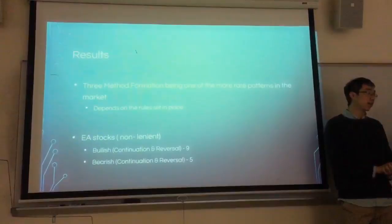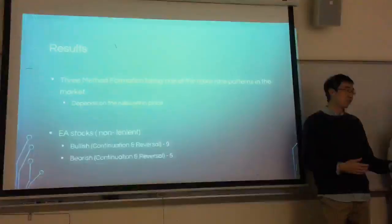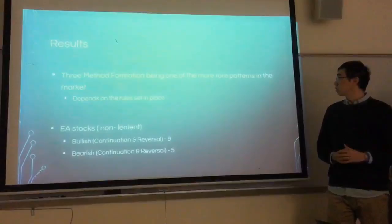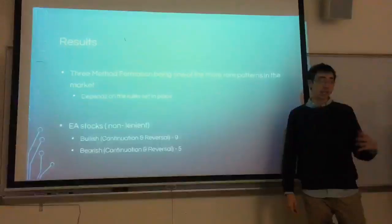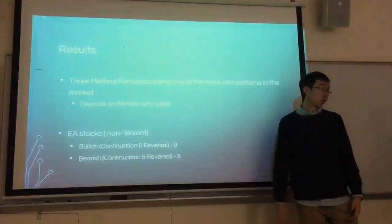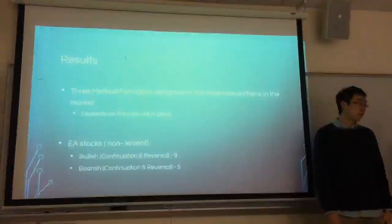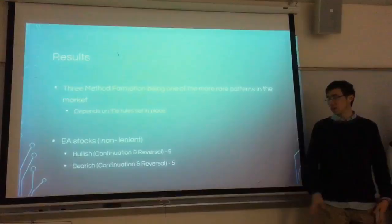Another issue with the results we did with EA, the program that we wrote, you can only put one CSV inside and then switch it out every time you want to, which is not optimized. The three method formation, the results, this is the non-linear one. This is why we tried to change the rules a bit because we found in the EA from 2007 to 2017 we only found nine bullish cases, both continuation and reversal. Bearish cases was only five. We tried to change it, but for now we only use the non-linear case because for the lenient cases, the middle candles don't matter where it is, whether it's a counter trend or reversal.